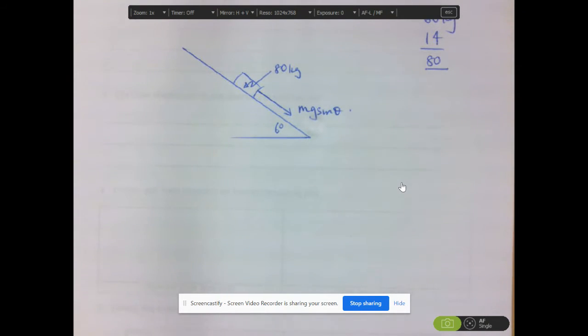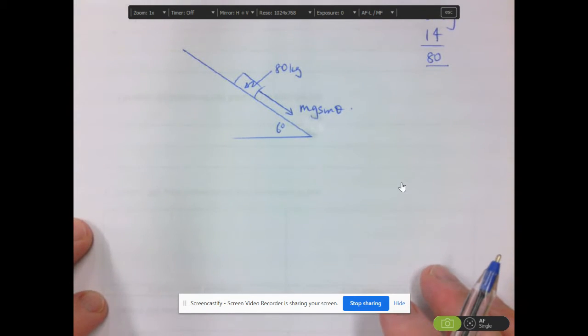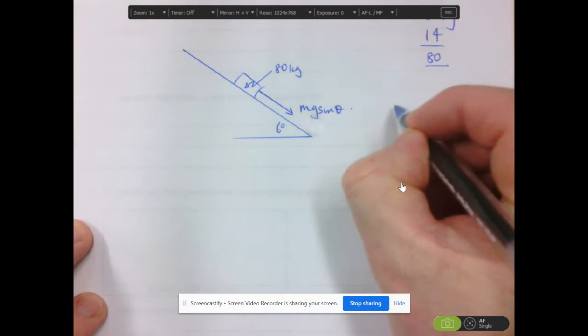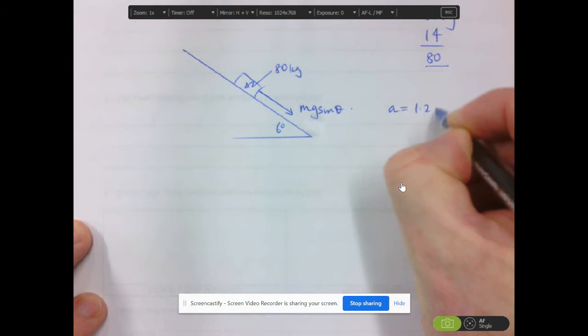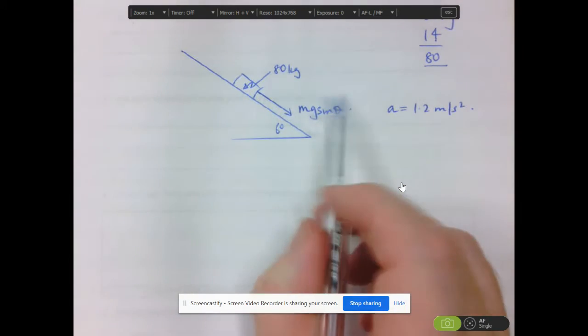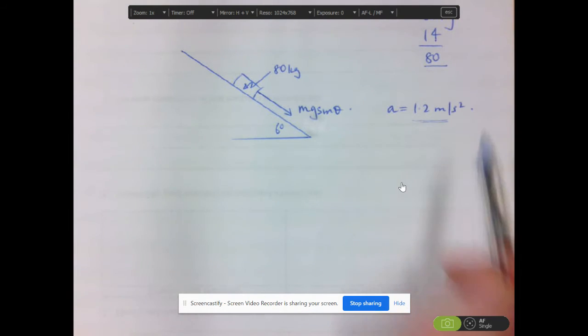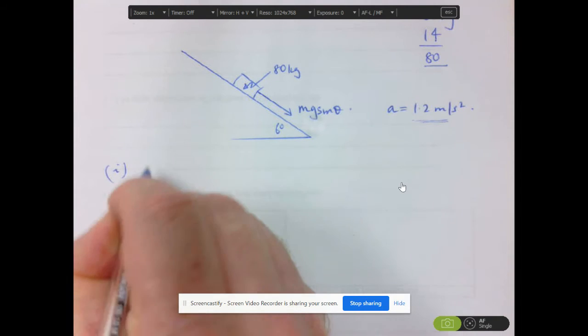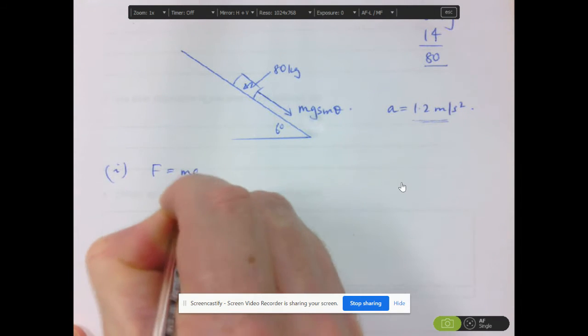Now, let's have a look at the first question. The first question is asking us, what is the overall force that is needed for him to have an acceleration of 1.2 metres per second squared? So for question one, all we're going to apply is F equals MA.